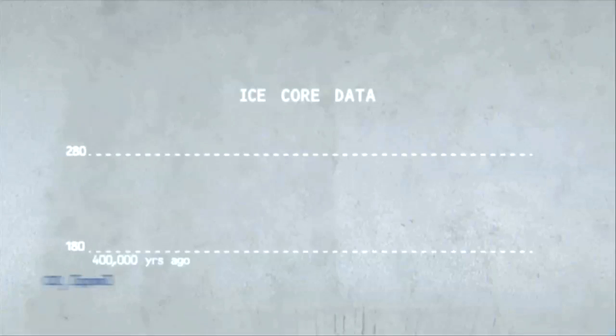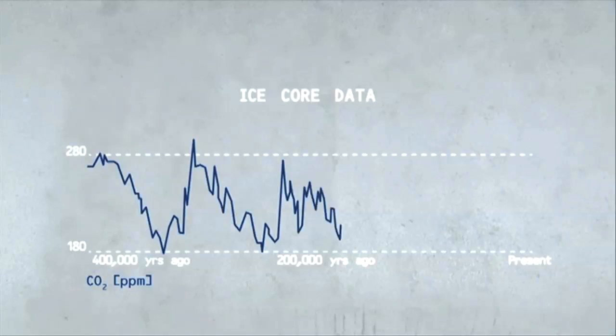Looking at the cores, we see a pattern that repeats. 280 parts per million of CO2, then 180, 280, 180, 280.